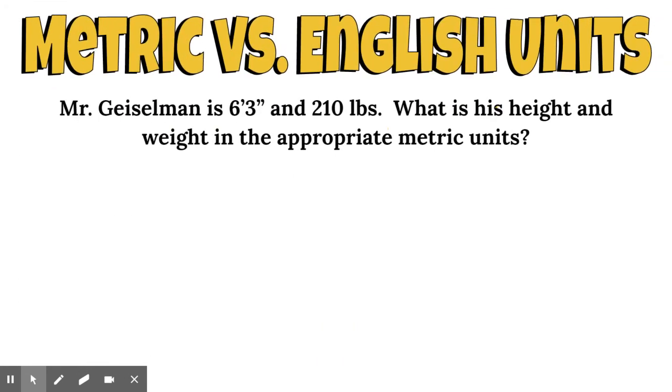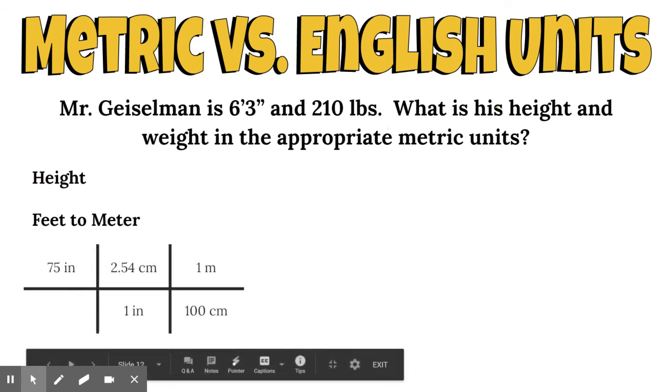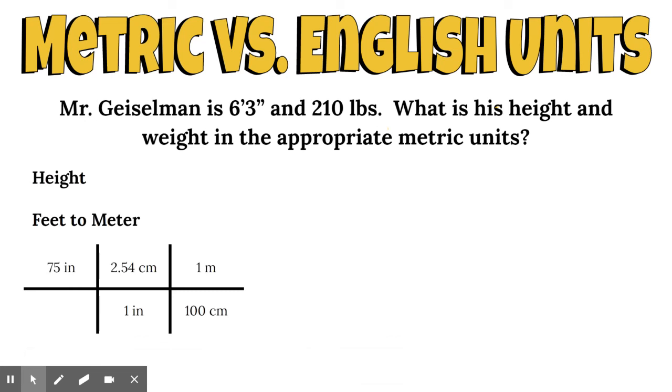For example, I am six foot three and weigh about 210 pounds. What is my height and weight in the appropriate metric units? Let's start with height. The appropriate unit is probably meters. I'll convert feet to meters. I already converted my height into inches: six foot three equals 75 inches tall. I'm going to set this equal to, and we're going to do dimensional analysis, which you'll do a lot of in chemistry.